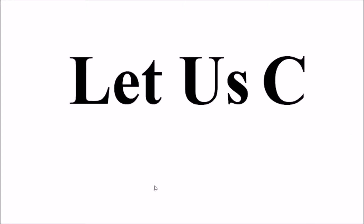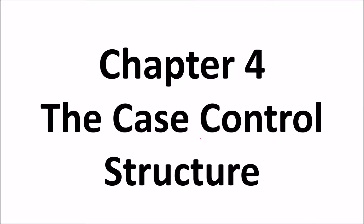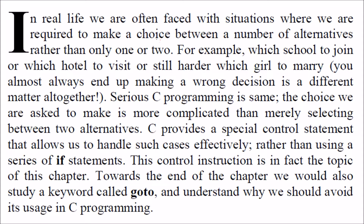We are looking at C programming. This is the case control structure, chapter number 4. In various situations we encounter while programming in real life, we have various options or various ways for a single decision — there can be various alternatives for a single input.